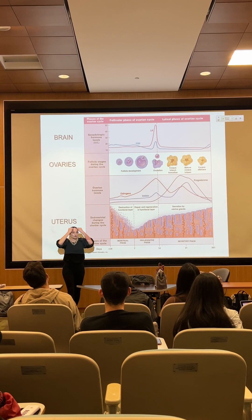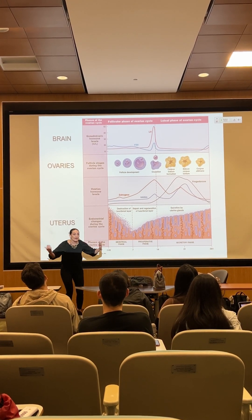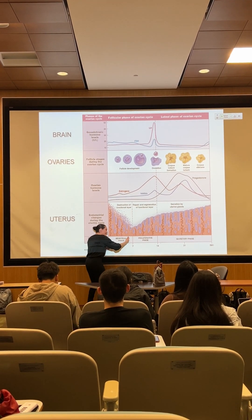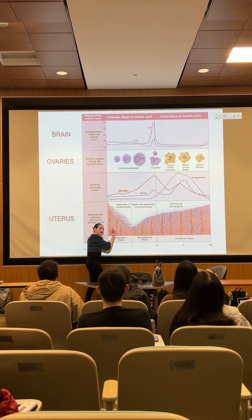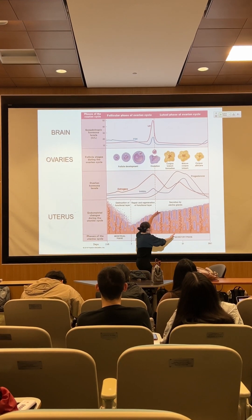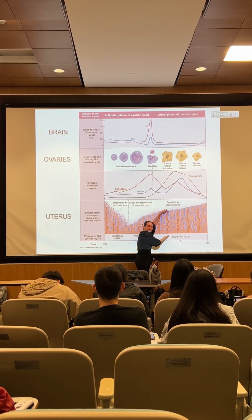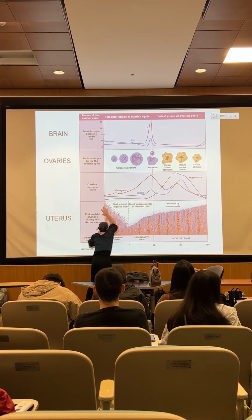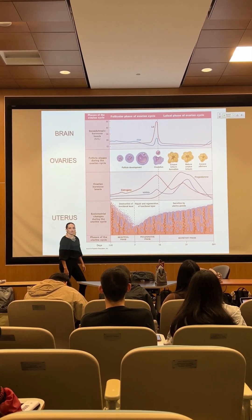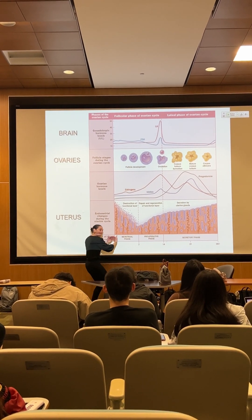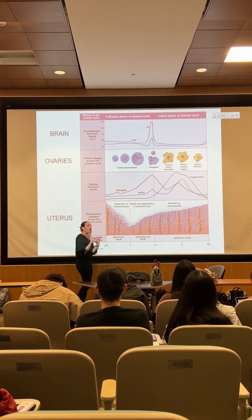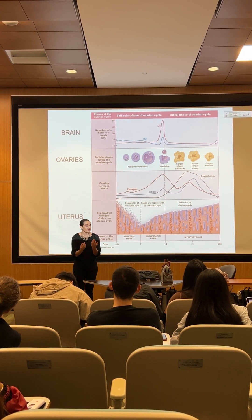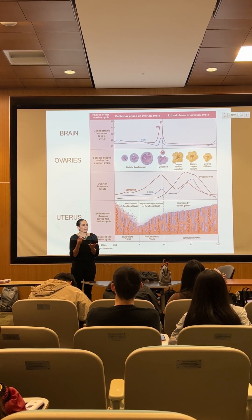The female starts bleeding — the menstrual phase — because whatever was thick and juicy and prepared to receive a fertilized egg is not necessary since there is no fertilized egg. So you remove it all, then rebuild from zero to create a fresh, proper environment for a possible fertilized egg to implant.